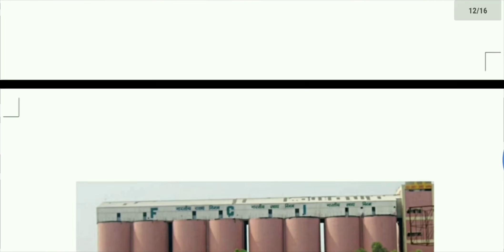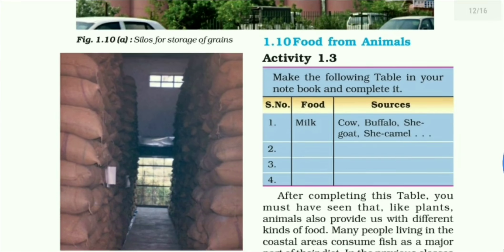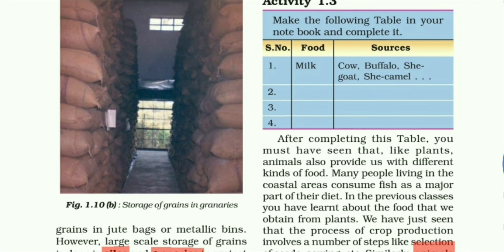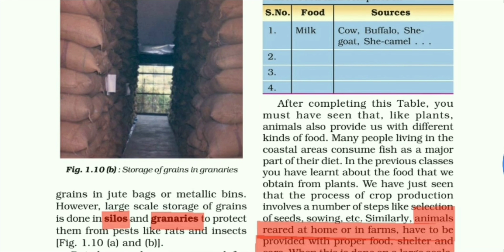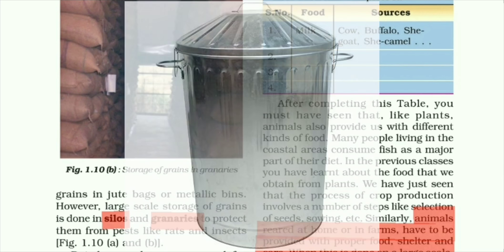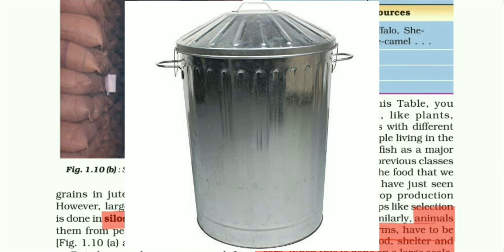Farmers store grains in jute bags and metallic bins. You can see the metallic bins here — farmers keep the grains in jute bags or in metallic bins for storage.